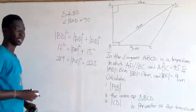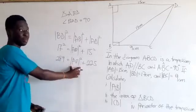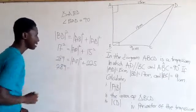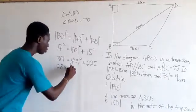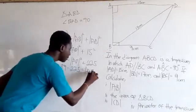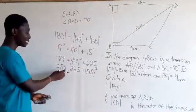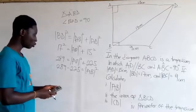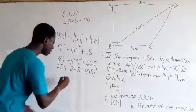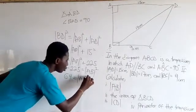Now let's move 225 to the other side so that we maintain AB squared. So we get 289 minus 225 equals AB squared. 289 minus 225 gives us 64, which equals AB squared.